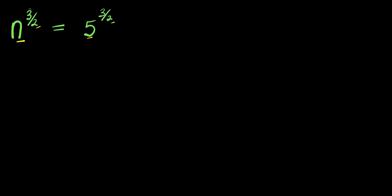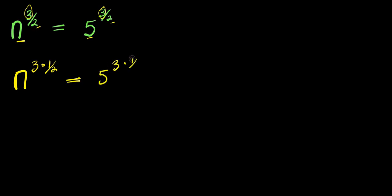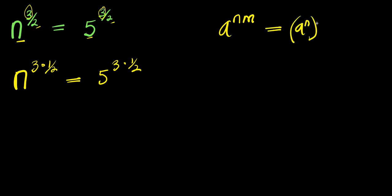We can start by factoring out 3 from the exponents. We also have a 3 we can factor out, so we have n to the power of 3 times 1 over 2 equals 5 to the power of 3 times 1 over 2. Now, a power of a product like this can be rewritten by separating the exponents, allowing us to change the powers.